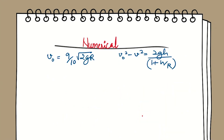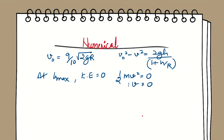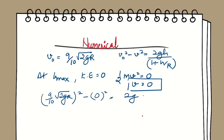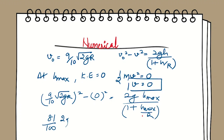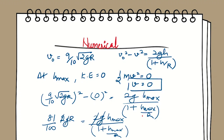At maximum height h_max, the kinetic energy becomes zero, so v = 0. Substituting all values: v₀² = [(9/10)√(2gR)]² = (81/100)(2gR), and v = 0. The energy equation becomes (81/100)(2gR) = 2g·h_max / (1 + h_max/r). We cancel 2g from both sides.